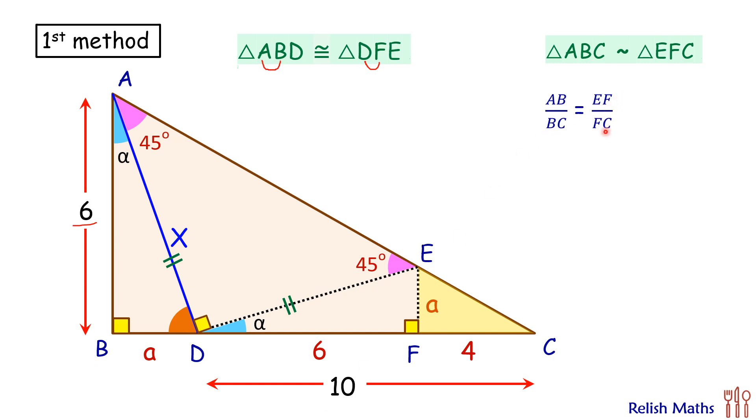AB upon BC is EF upon FC. AB is 6 centimeter, BC is 10 plus a centimeter, EF is a, and FC is 4 centimeter. So we will get here 6 upon 10 plus a equals a upon 4 centimeter. When we'll solve it we'll get a quadratic.